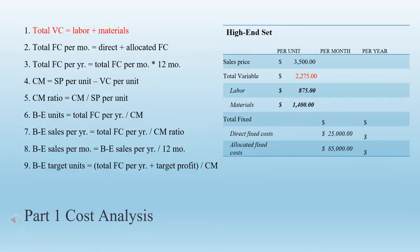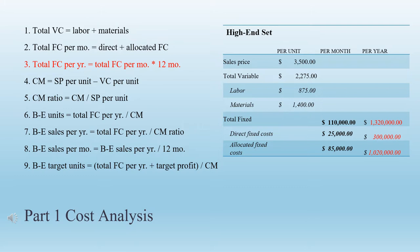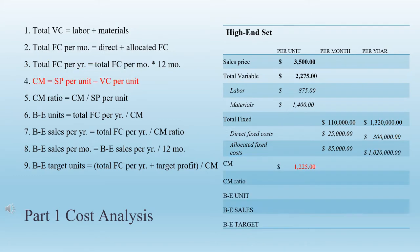The first step in the cost analysis is to find the total variable costs by adding labor and materials, giving us $2,275 for the total variable cost per unit. Step 2: find the total fixed cost per month by adding the direct and allocated fixed costs for $110,000 per month. Step 3: find the total fixed cost per year by multiplying the total fixed cost per month by 12 months for $1,320,000. Step 4: calculate the contribution margin by subtracting variable costs per unit from the selling price per unit for $1,225 per unit.